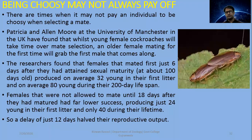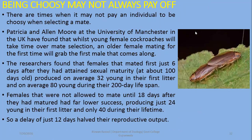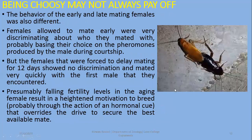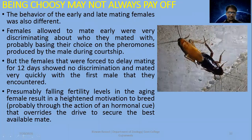Being chosen may not always pay off. There are times when it may not pay an individual to be chosen when selecting a mate. In the case of certain cockroaches, researchers found that females that mated first — just 6 days after attaining sexual maturity at about 100 days old — produced on average 32 young in their first litter, and on average 80 young during their 200-day lifespan. Females not allowed to mate until 18 days after maturation had far lower success, producing just 24. So any mate selection delay in cockroaches can reduce next-generation output.